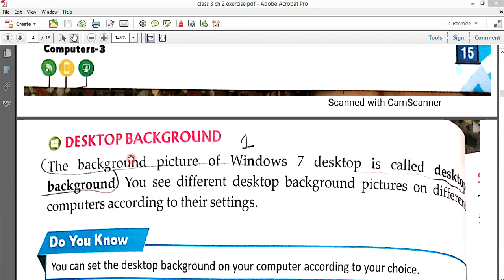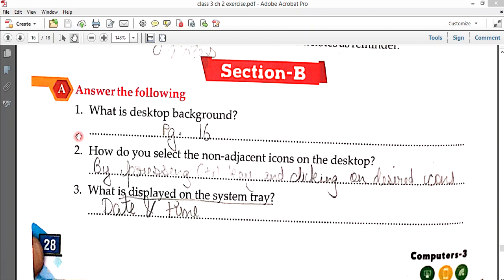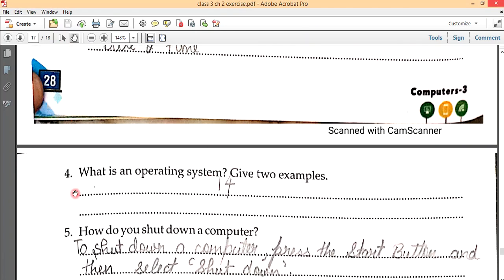We are going to complete the matters of the taskbar. How do we select the layout of the taskbar on the desktop? By pressing the ctrl key and clicking on desired icon. And third, what is displayed on system tray? That is date and time.